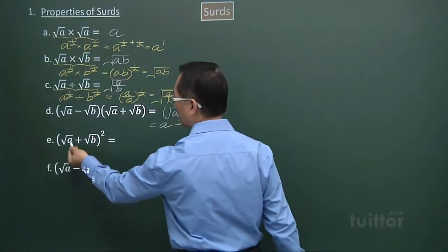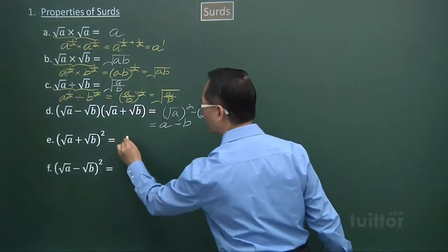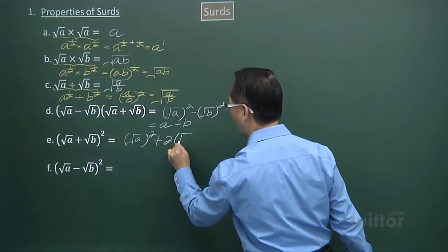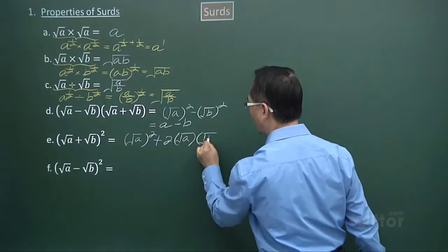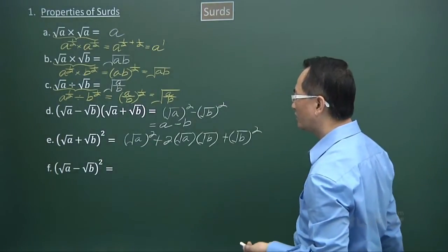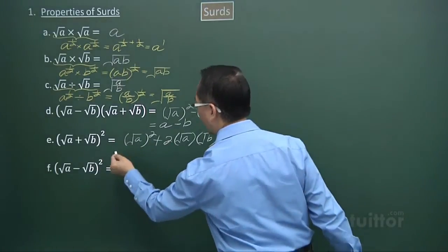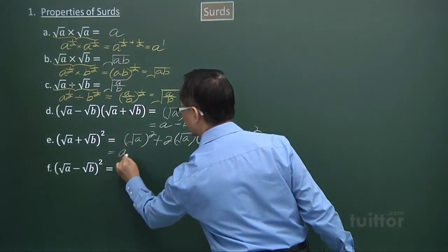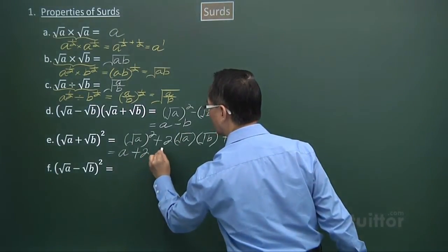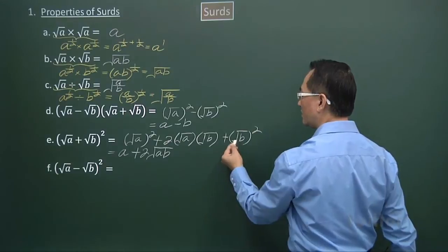For part e, we have square root a plus square root b, bracketed and squared. Using the expansion, we get square root a squared plus 2 times square root a times square root b plus square root b squared. When I square the square root a, I get a. So the result is a plus 2 square root of ab, and the last term is just b.